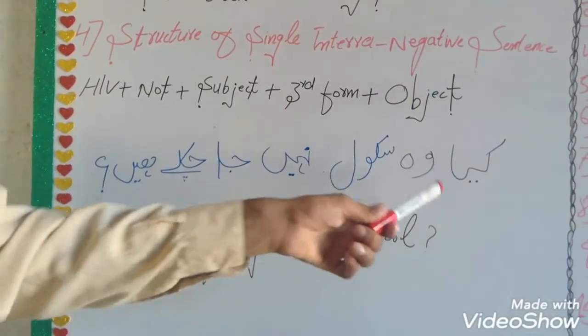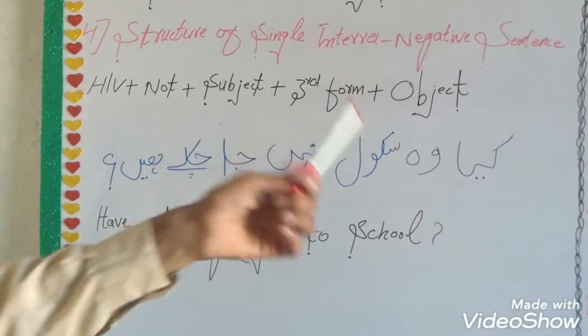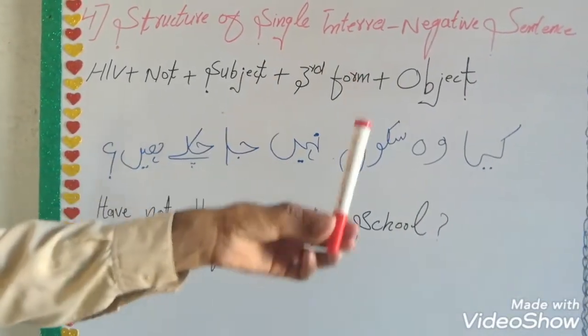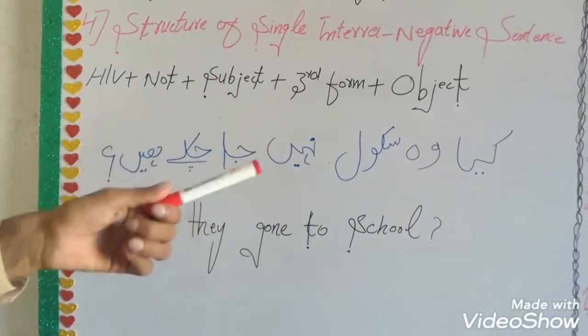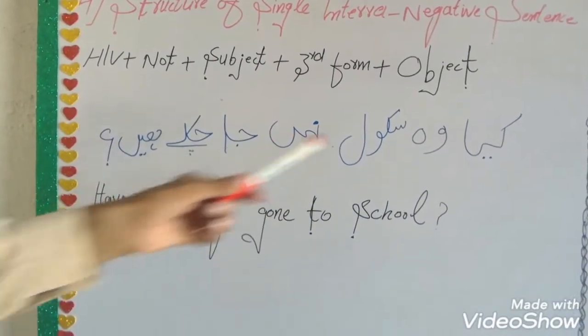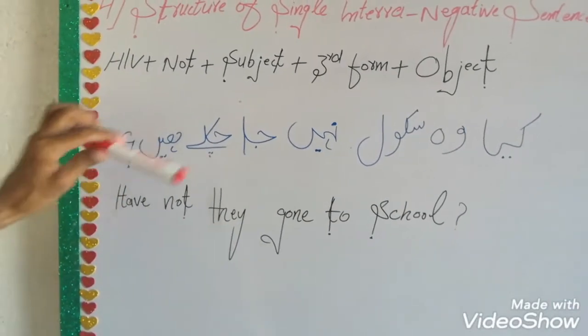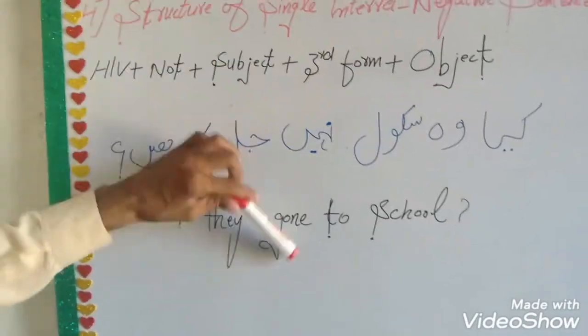If a sentence is coming in negative mood, how can we change this sentence into English? First of all in this formula, helping word comes, then 'not', then subject, then third form, then object.